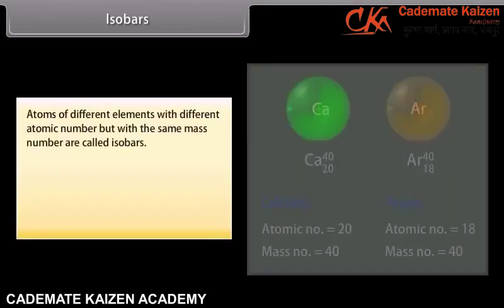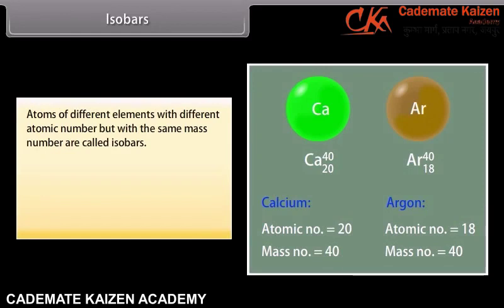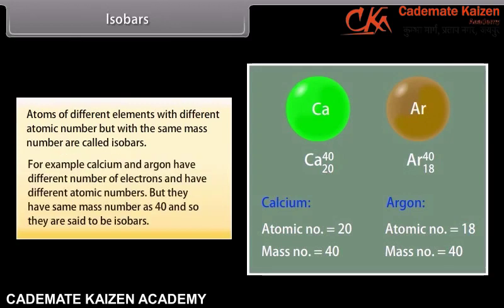Isobars. Atoms of different elements with different atomic numbers but with the same mass number are called isobars. For example, calcium and argon have different numbers of electrons and different atomic numbers, but they have the same mass number of 40, and so they are said to be isobars.